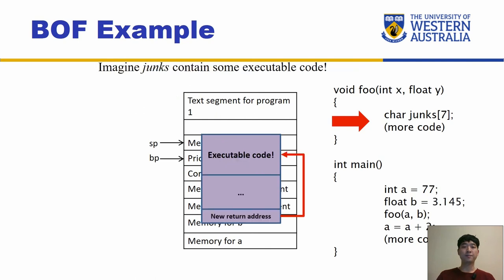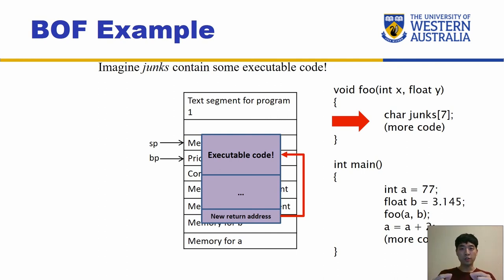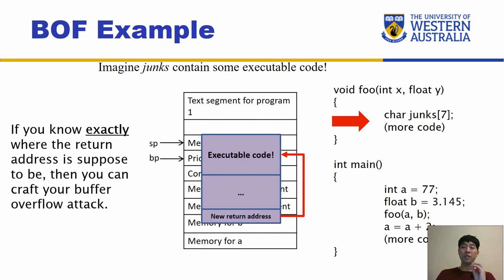Now imagine the junk variable contains some executable code instead. That's when we create machine code for accessing the shell. The top part is the executable code, and below we fill some random junk. Eventually we put a new return address that points back to our executable code. So when it goes to where it's supposed to return, if we map it nicely on top of that, it will jump back to our code. If you know exactly where the return address is supposed to be, then you can craft your buffer overflow attack.